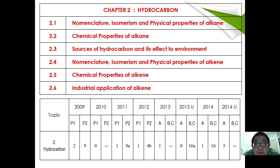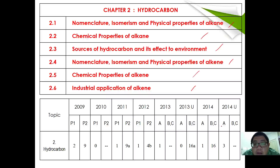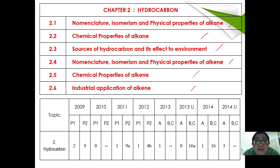We'll also cover chemical properties of alkane, sources of hydrocarbon and its effect on the environment, nomenclature, isomerism and physical properties of alkene, chemical properties of alkene, and industrial applications of alkene — and throughout the past exam questions. This is quite a hot topic, especially in the few recent semesters.